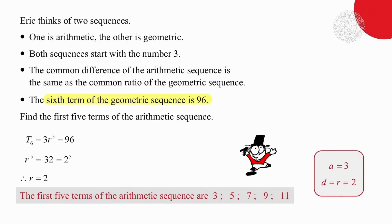The most important information is that the sixth term value is 96. Using the general term for a geometric sequence — ar to the n minus 1 — and substituting the first term of 3 and n equals 6 into the formula, we get 3r to the 5 equal to 96. Solving that equation gives us a ratio equal to 2. We know that the ratio is the same as the common difference, so we take the first term and keep adding 2 to each previous value until we get 5 terms.